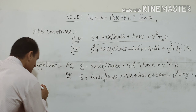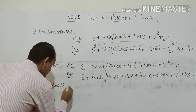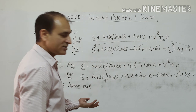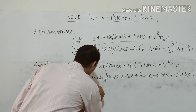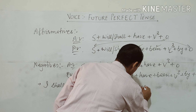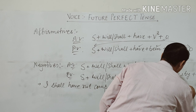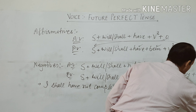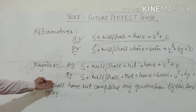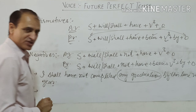Now let's convert the same sentence into passive voice. In affirmative our sentence was I shall have completed my graduation by this time next year, but here we have to use not because this is negative. So the negative active voice sentence is: I shall not have completed my graduation by this time next year. When we change this into passive voice, we first make the object the subject.